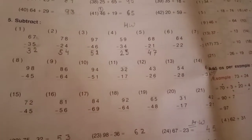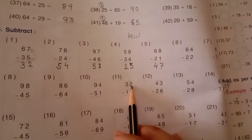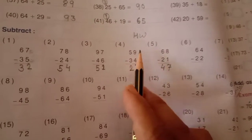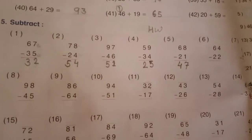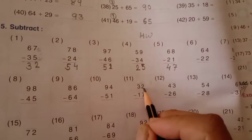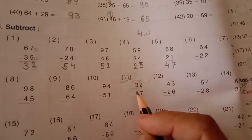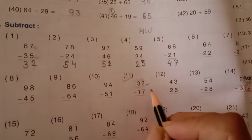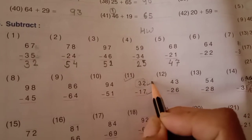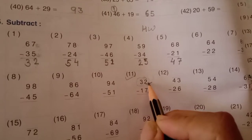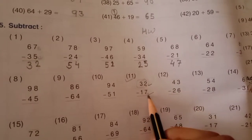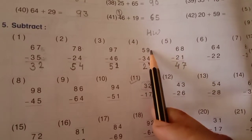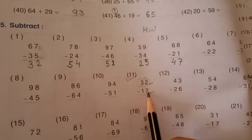Now, अब हम यहाँ पे कुछ sum देखते हैं जो subtraction नहीं होते हैं. आपके अभी तक हमने किस में से subtract किया था? ऊपर की जो digit थी, वो bigger थी. ठीके? वो greatest value थी. Greater में से हम smaller value को subtract करते हैं. लेकिन कुछ sum ऐसे होते हैं जिसमें students — question number 11 देखोगे आप. तो 2 is a smaller value, and 7 is a bigger value. हम हमेशा subtraction में bigger में से smaller को less करते हैं. Smaller में से हम bigger को less नहीं कर सकते हैं.